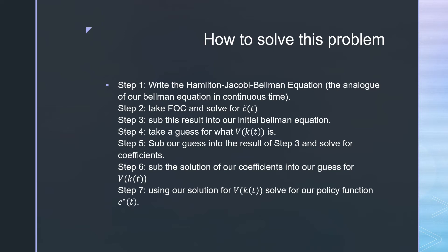We're going to then sub this result into our initial Bellman equation. After that, we're going to take a guess for what V(k(t)) is. Then we're going to sub that guess into our result for step three and solve for our coefficients. After that, we're going to sub our solution of our coefficients into our guess for V(k(t)), and then using our solution for V(k(t)), we're going to solve for our policy function c*(t).